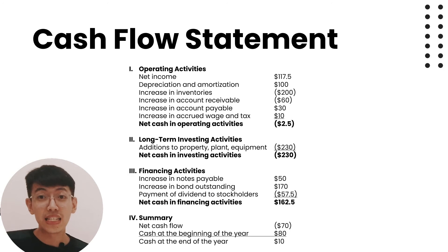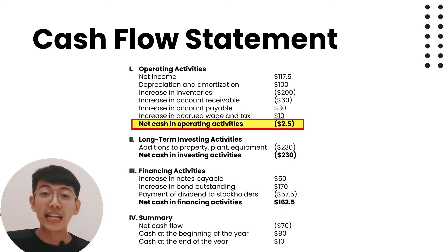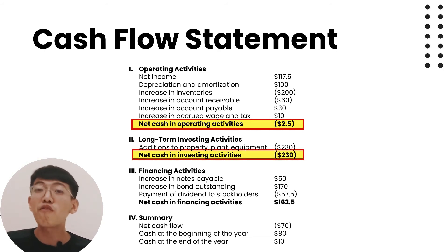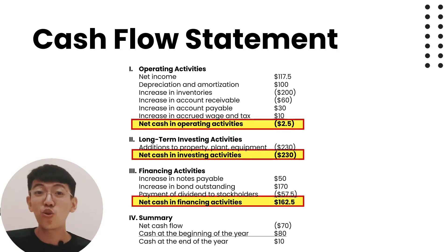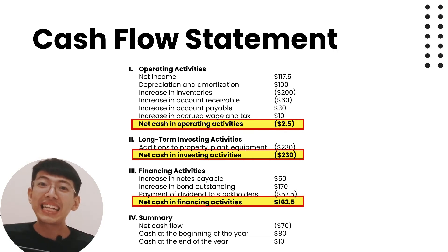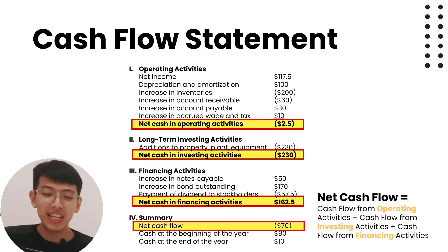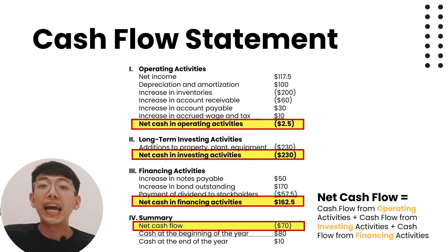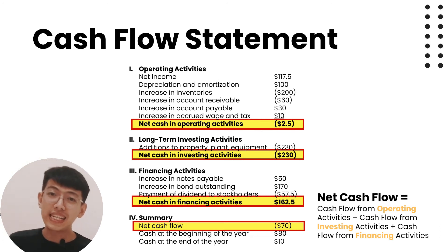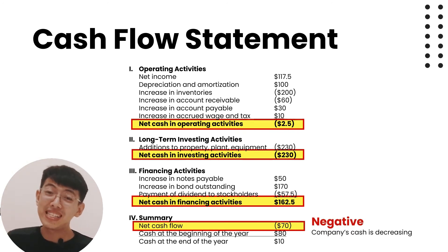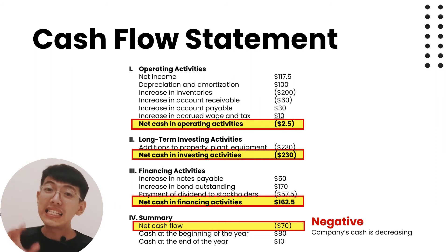Using the indirect method, financing activities relate to interest-bearing current liabilities, long-term liabilities, and equity. In this example, the net cash from operating activities is minus 2.5 dollars, from investing activities is minus 230 dollars, and from financing activities is 162.5 dollars. The total net cash flow is the sum of these three: minus 2.5 plus minus 230 plus 162.5 equals minus 70 dollars.